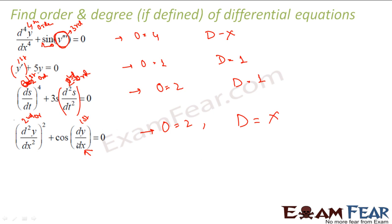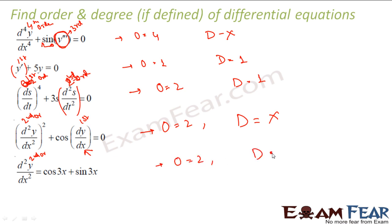Similarly: d²y/dx² = cos 3x + sin 3x. The second order term gives order 2. For degree, it has sin and cos, but these are functions of x — not of any derivative. So degree is defined. The highest power of the highest order term (d²y/dx²) is 1, so degree is 1.